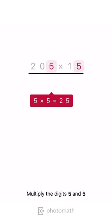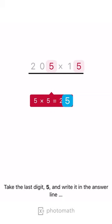Multiply the digits 5 and 5. Take the last digit, 5, and write it in the answer line.